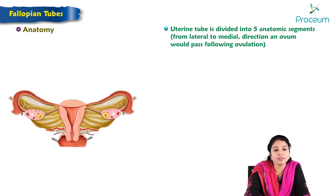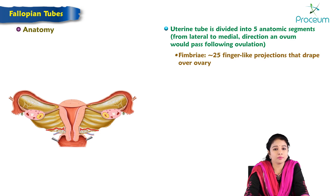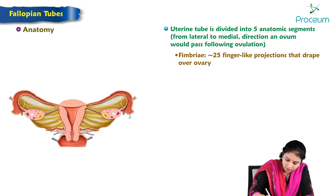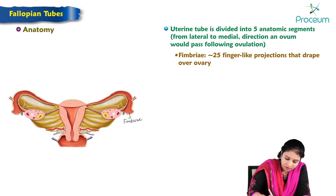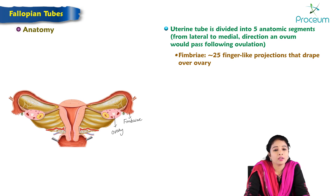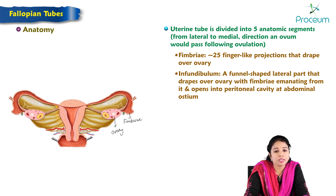The uterine tube is divided into five anatomic segments from lateral to medial, following the direction an ovum would pass after ovulation. The lateral-most end is the fimbria — approximately 25 finger-like projections that drape over the ovary. The next part is the infundibulum: a funnel-shaped lateral part that drapes over the ovary with the fimbria emanating from it.